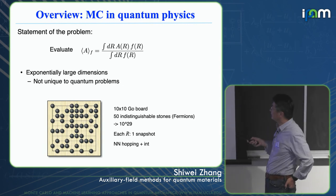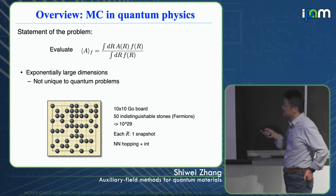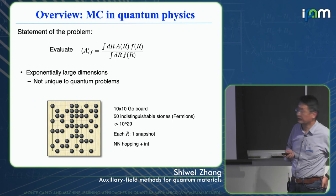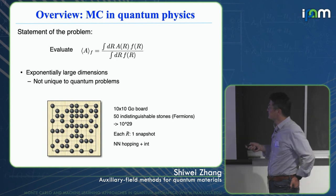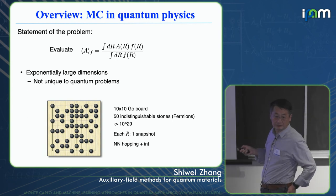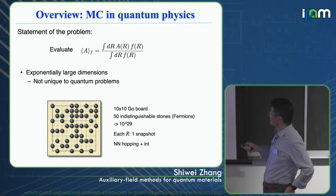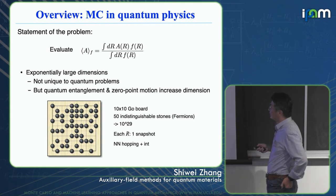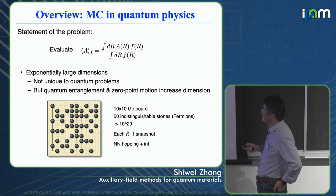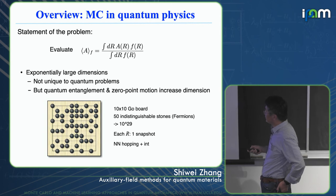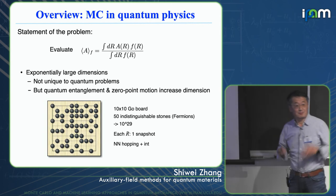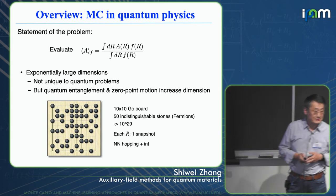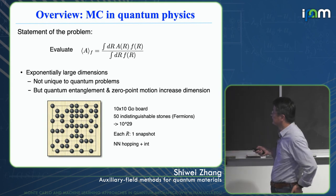Exponentially large dimensions — that's what makes quantum problems hard. But this is really not unique to quantum physics. Classical physics has the same dimensionality. Quantum entanglement and zero-point motion, the kinetic energy, increase the dimension but not by some drastic amount.